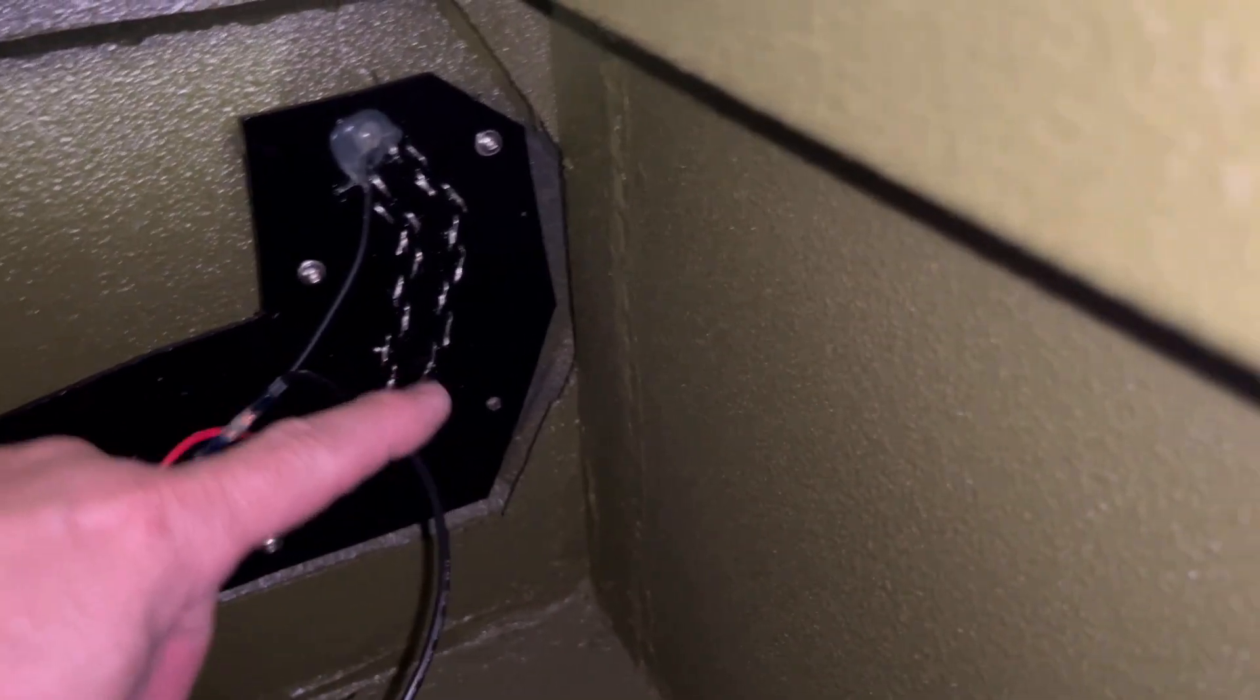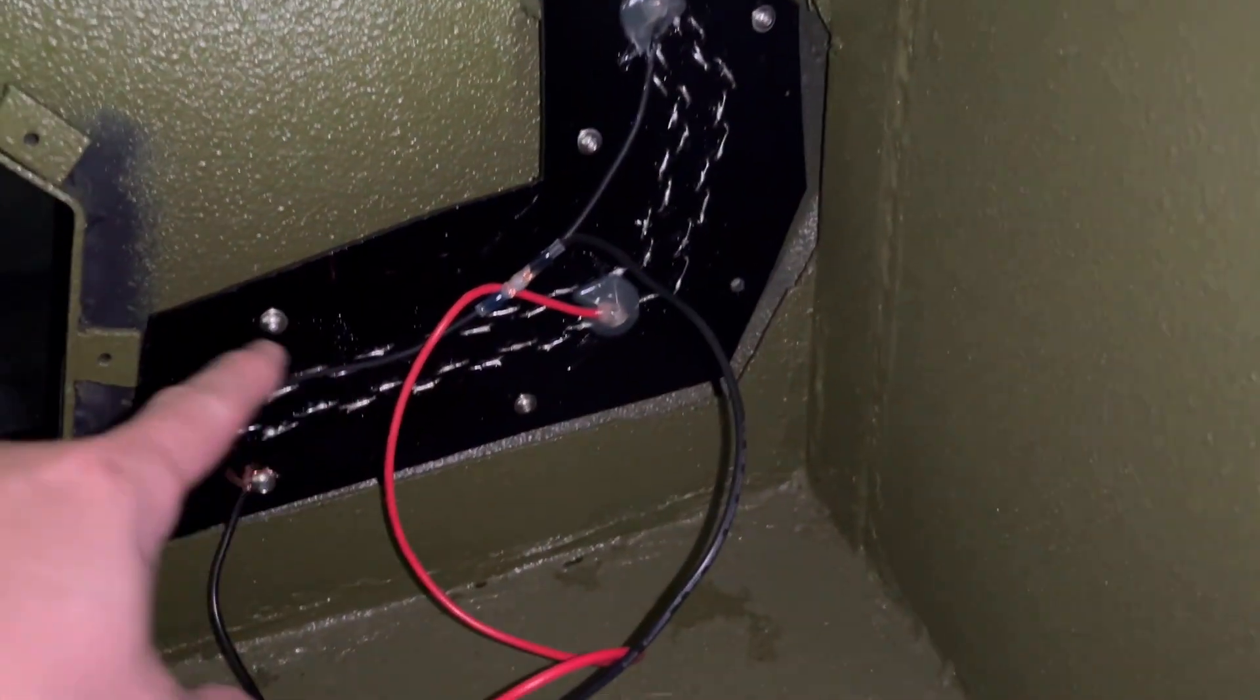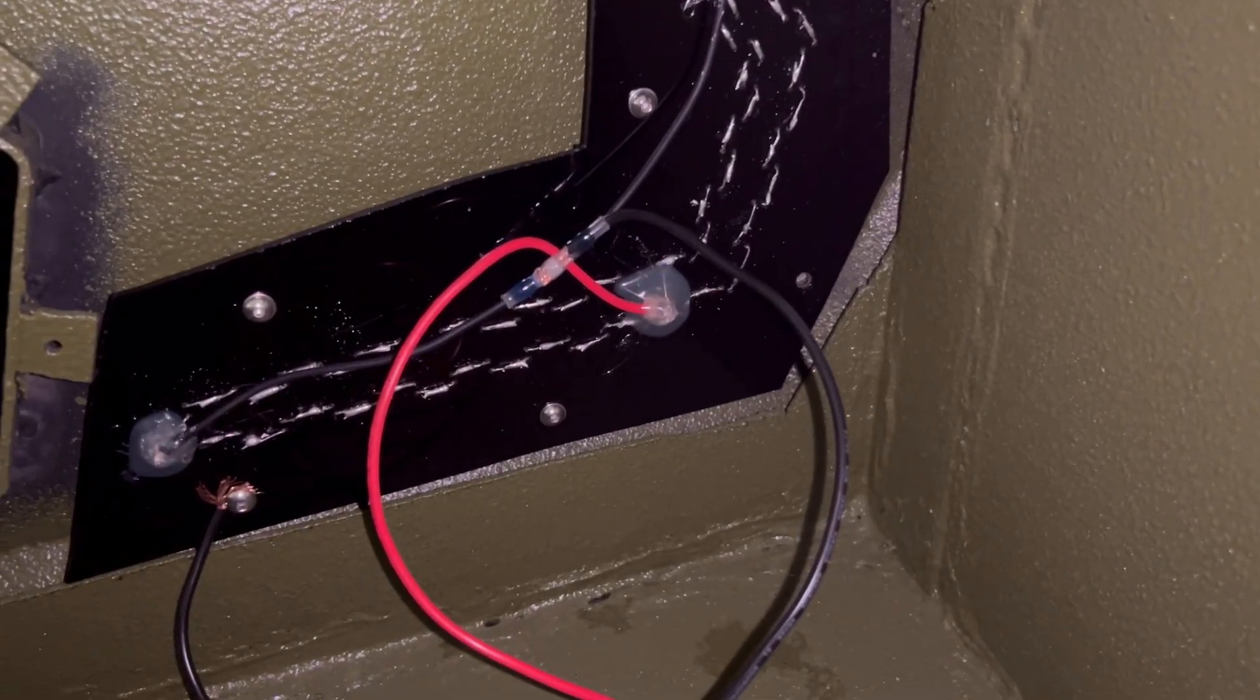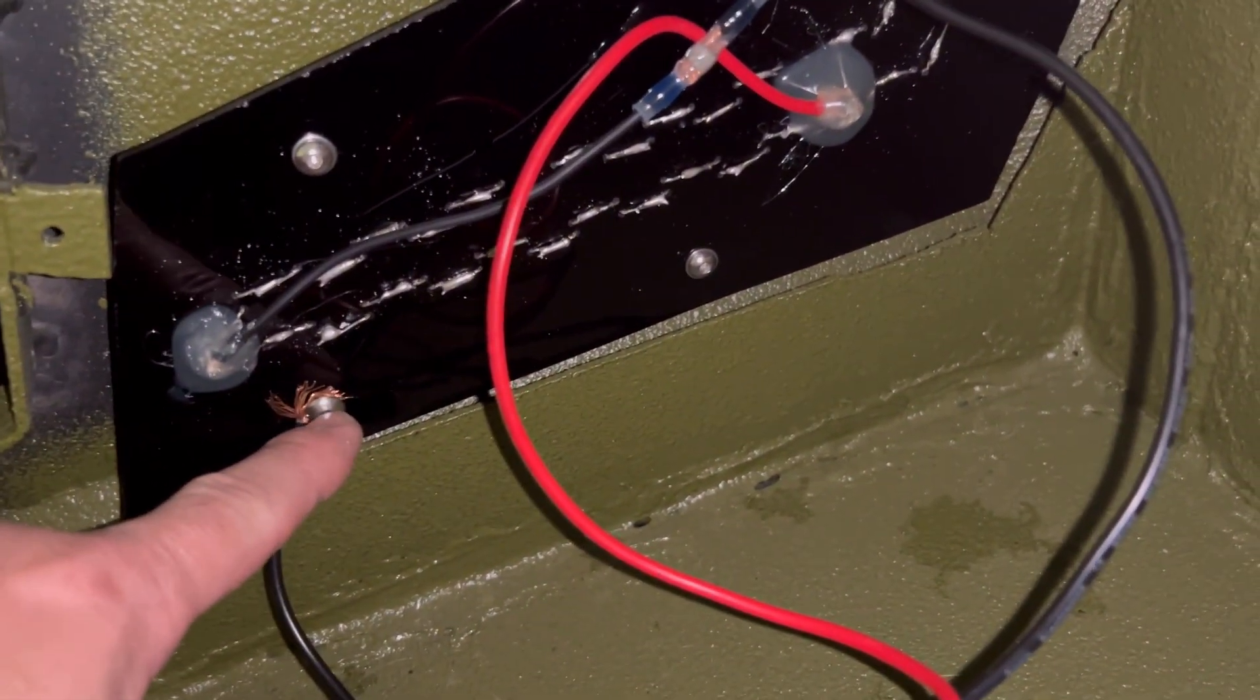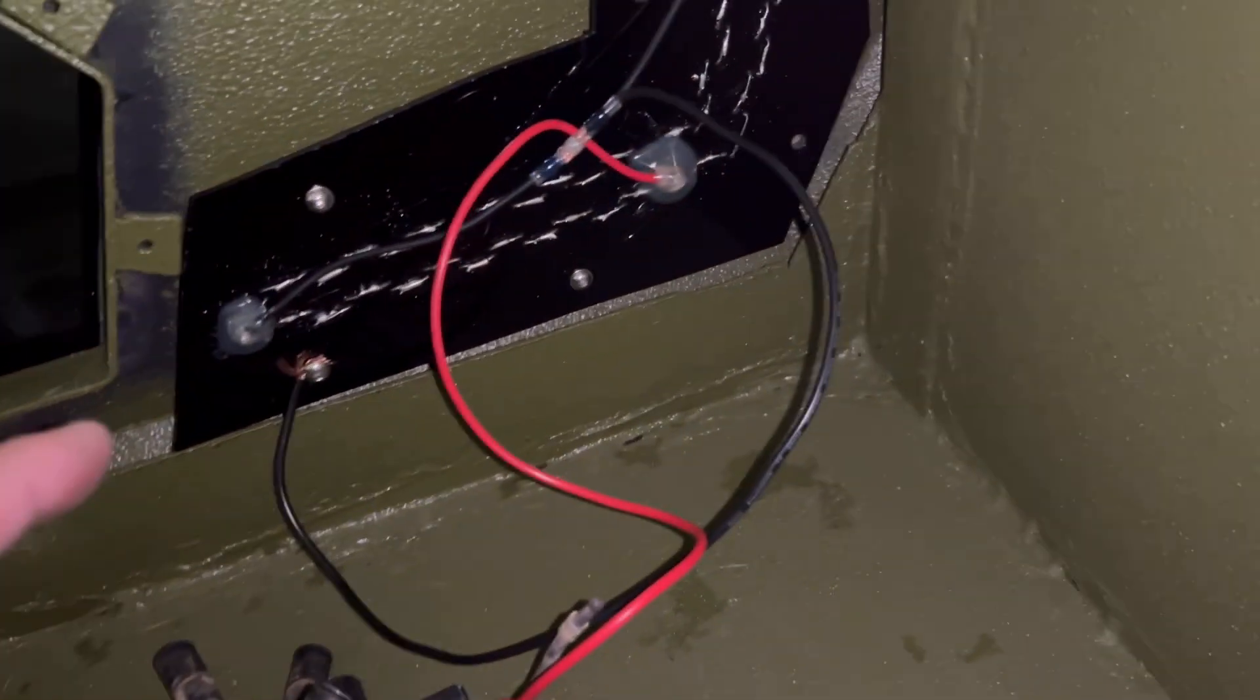For some reason, one of my bolts doesn't fit. So I'm going to have to get a tap and tap that out. But all my other ones are getting in just fine. And for right now, just for testing, I'm just going to ground the negative right into this bolt die, bolt to the chassis. So it should have good grounding.